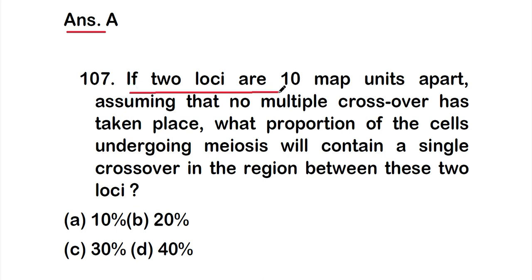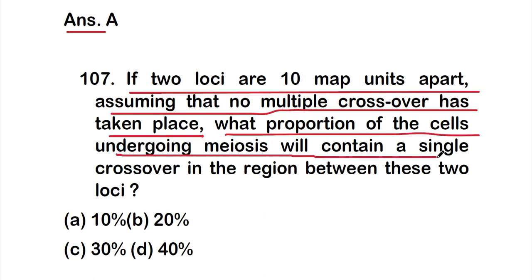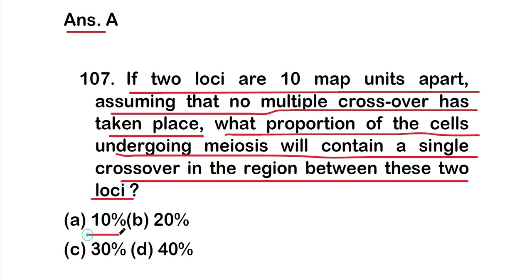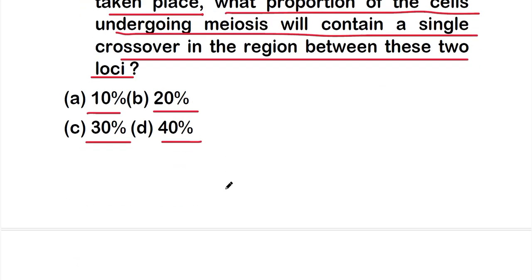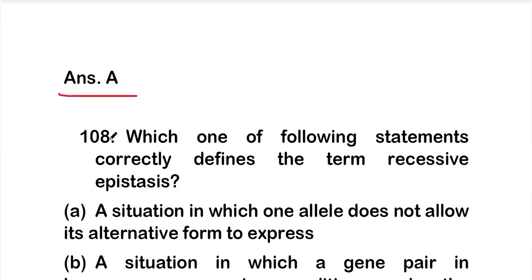Question 107: if two loci are 10 map units apart, assuming no multiple crossovers have taken place, what proportion of the cells undergoing meiosis will contain a single crossover in the region between these two loci? Options: A 10%, B 20%, C 30%, D 40%. The right answer is Option A — 10%.